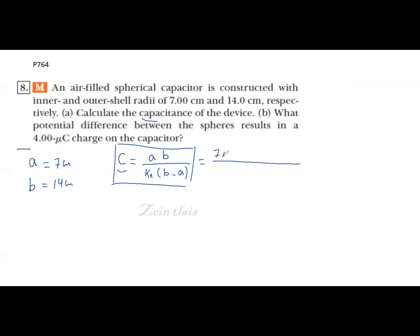7 times 10 to the minus 2 times 14 times 10 to the minus 2, divided by ke. I give you the value of ke which is equal to 8.99 times 10 to the power 9, times b minus a equals 14 times 10 to the minus 2 minus 7 times 10 to the minus 2.